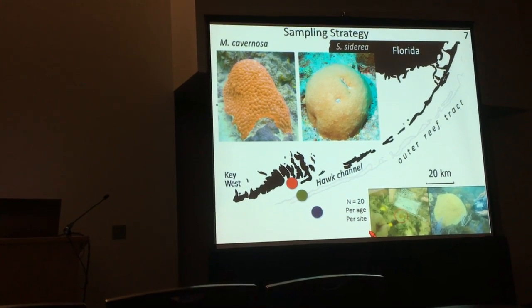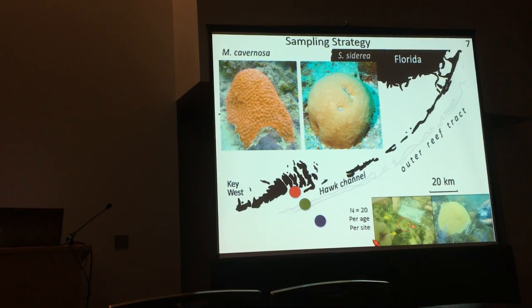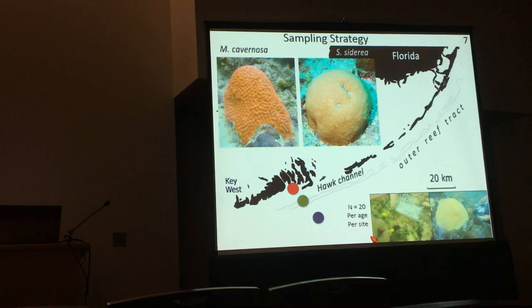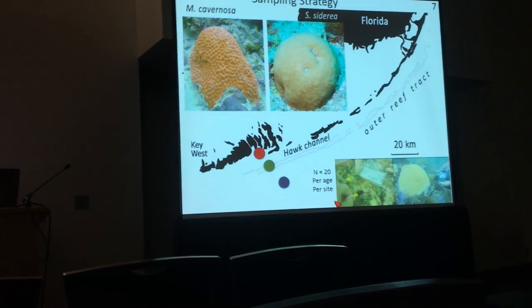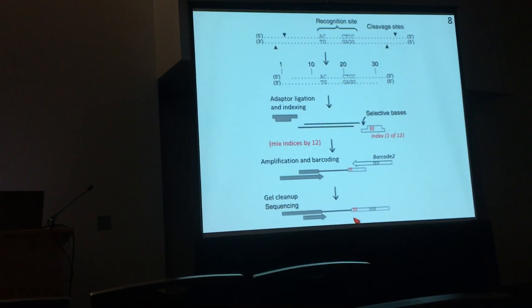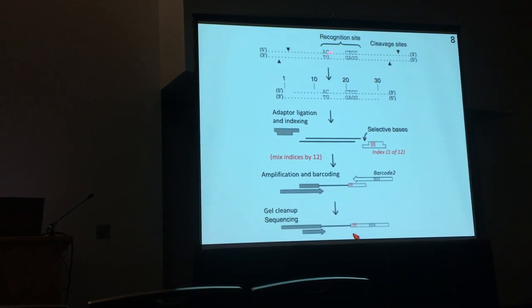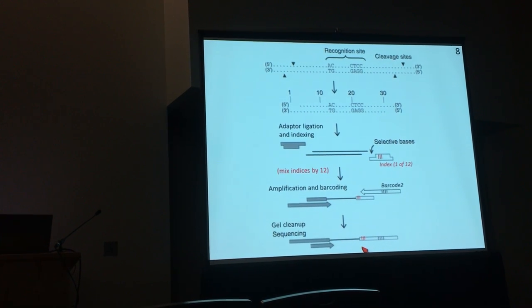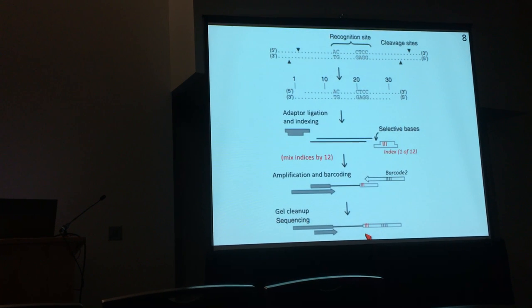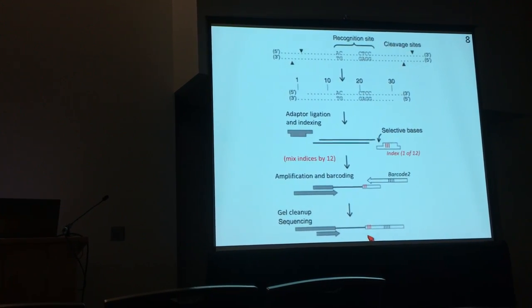In each habitat we sampled 40 individuals: 20 juveniles, which are the smallest colonies we can identify to species level, and 20 adults, which are the largest colonies we can find. There should be at least ten years of age difference between these groups. We genotyped them using 2b-RAD, our own flavor of RAD sequencing using type 2b restriction enzymes. At each recognition site the enzyme cuts on both sides, giving fragments of exactly the same size, which we ligate adapters onto for sequencing. This uniformity also simplifies de novo assembly and locus calling, since we don't yet have a genome for this species.